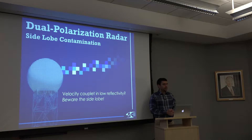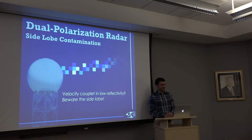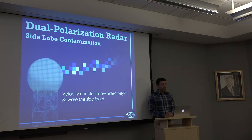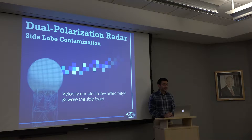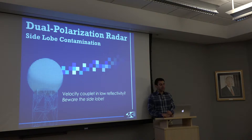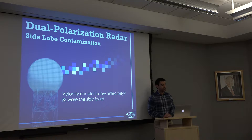Side lobe contamination doesn't sound that interesting as a scientific idea, but we see pretty frequently instances of contamination from the side lobe that really affects our velocity data and velocity signatures and can lead you astray pretty quickly. If you have a velocity couplet and low reflectivity and think you're about to issue a tornado warning, beware the side lobe.